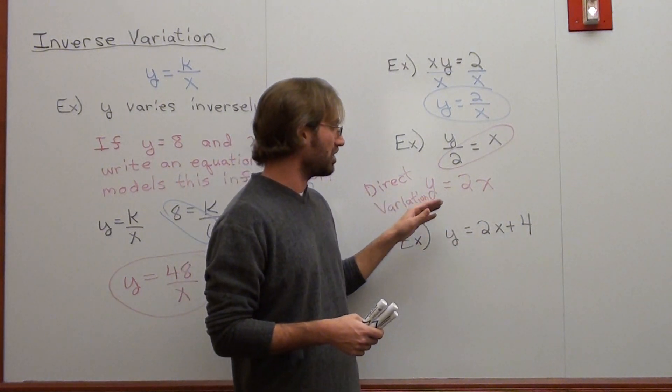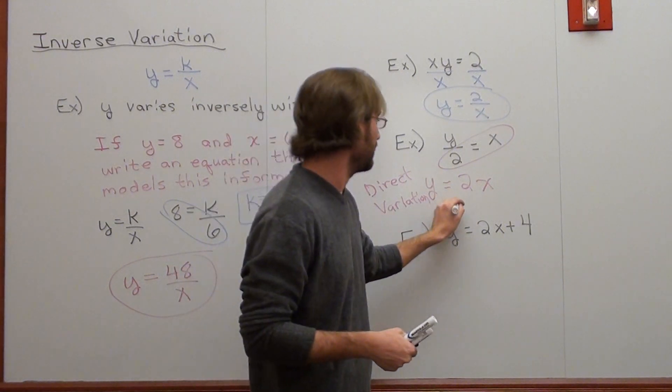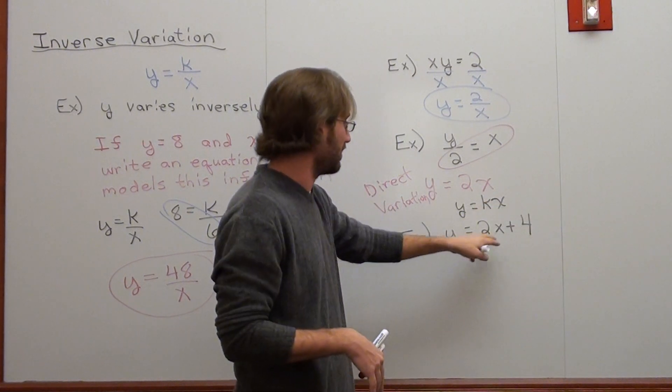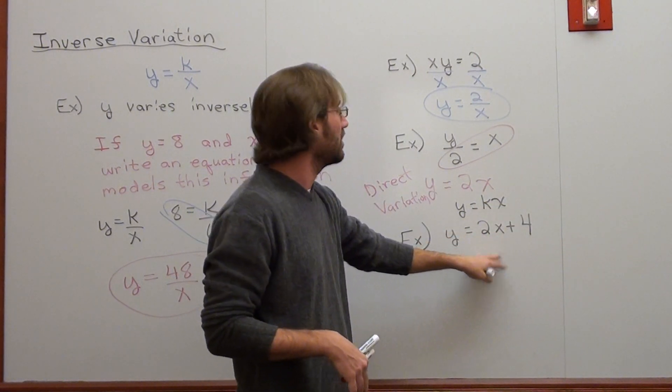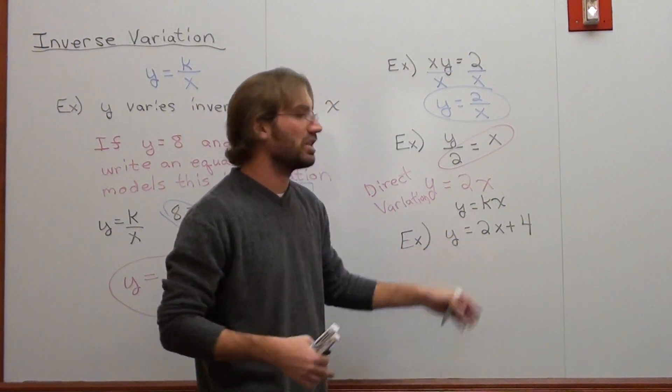And the very simple reason why is, in order for it to be direct variation, it has to be y equals kx. I'll go ahead and re-elaborate on that again. Not kx plus something. And the x isn't in the denominator with just a number over x. So it's not inverse. This is just a linear function.